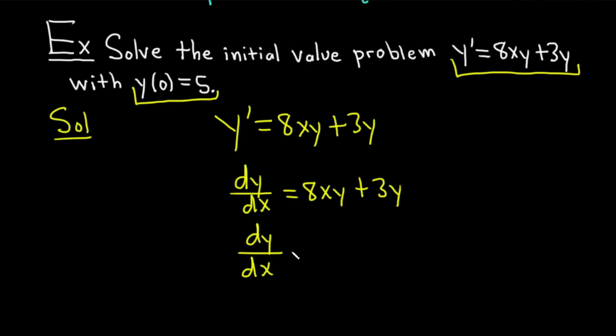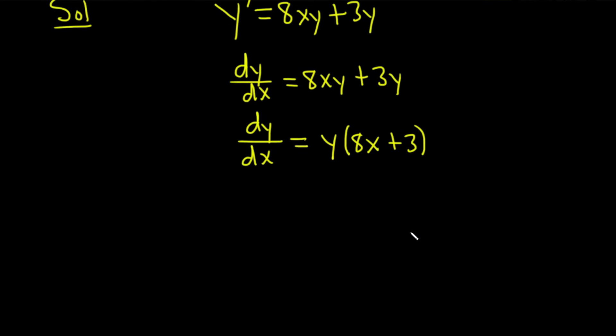So dy dx is equal to... I'm going to put the y in the front. So y parentheses 8x plus 3. And now we're ready to make the key step where we basically separate everything. We have the y on the right-hand side. So I'm going to divide both sides by y. On the left-hand side, we're going to get dy over y. And on the right-hand side, I'm just going to multiply it by dx. So we'll get parentheses 8x plus 3 dx.